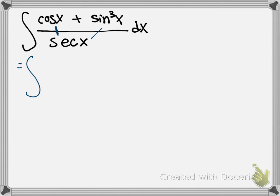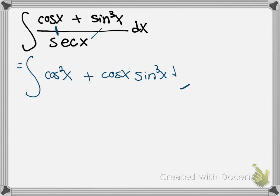Cosine divided by secant — we know secant is 1 over cosine — so cosine divided by secant can be written as cosine squared. Then sine cubed divided by secant: again secant is 1 over cosine, so that simplifies to cosine of x times sine cubed of x, dx.